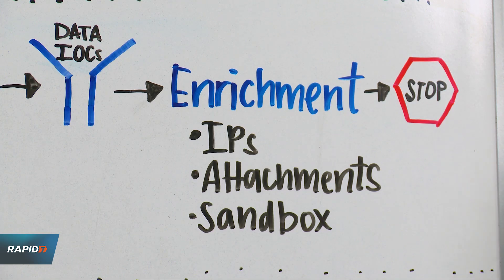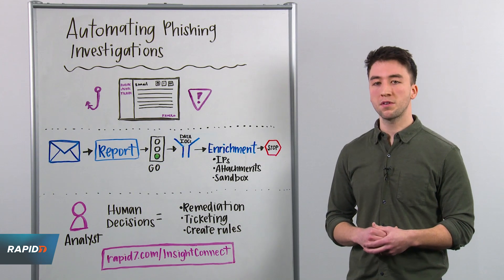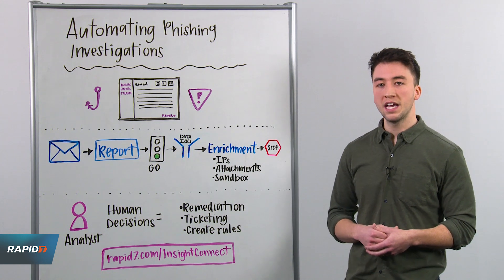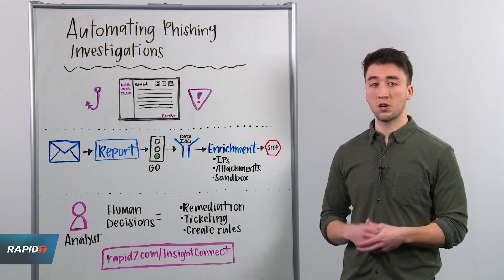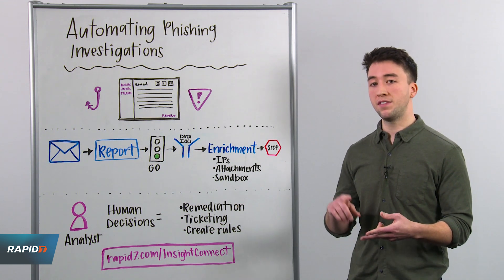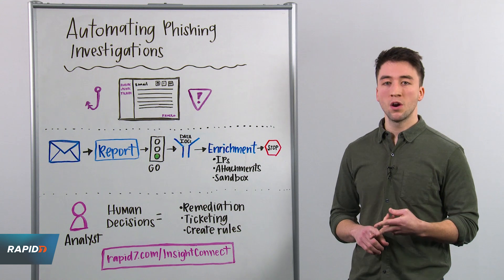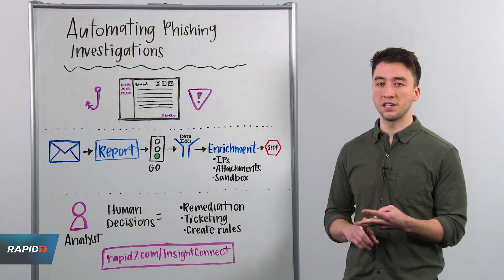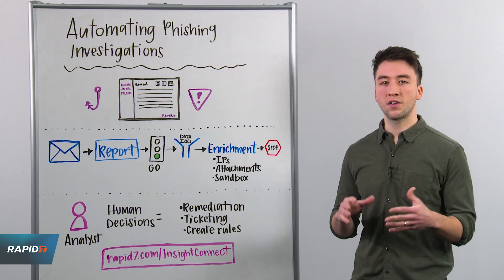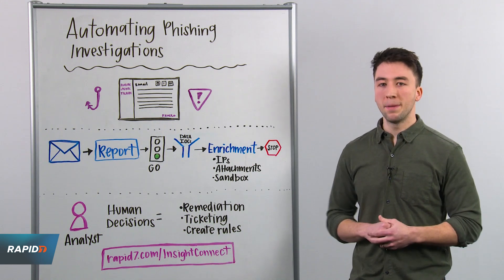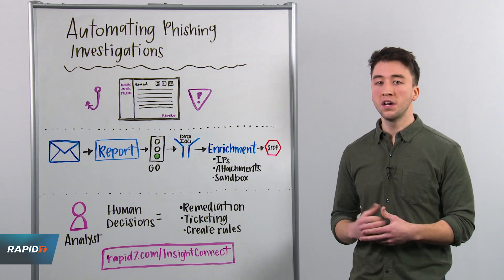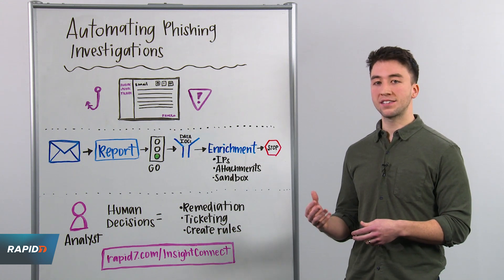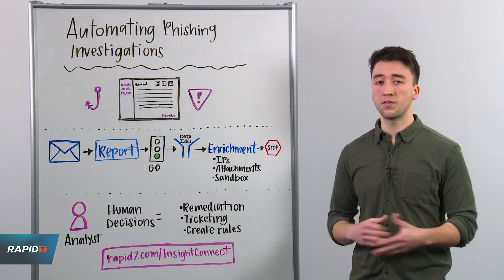Once you've parsed out the indicators, you can enrich them with data from a variety of sources. Look for a solution that integrates with a number of third-party products out of the box, including threat feeds. With InsightConnect, we can review IPs with a Whois lookup, check them against open source IP feeds like Abuse IP Database, or integrate commercial enrichment tools like Anomaly to provide context for any of our indicators. Many customers will also hash the included attachments and check them against sites like VirusTotal, and you can take it a step further and pass any included files to a sandbox of your choice for detonation.